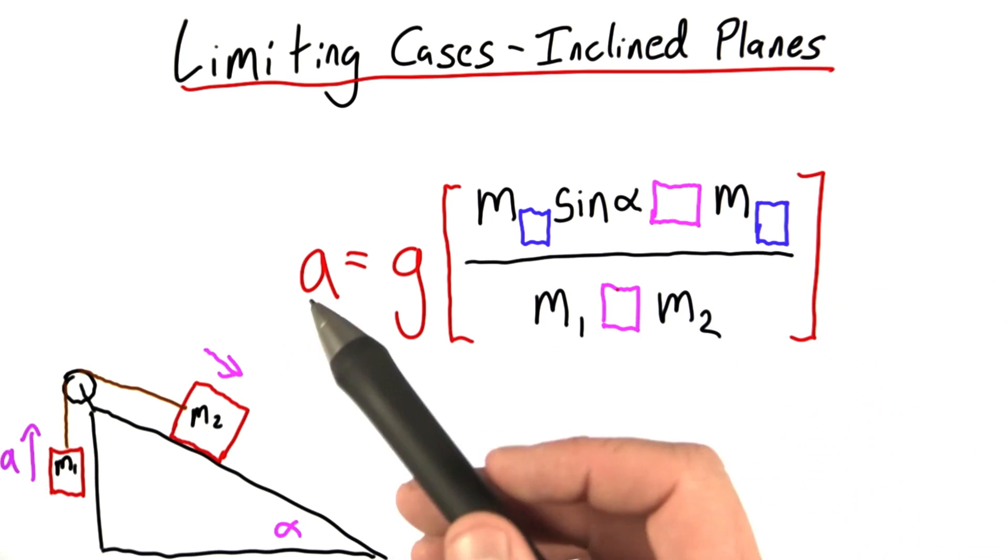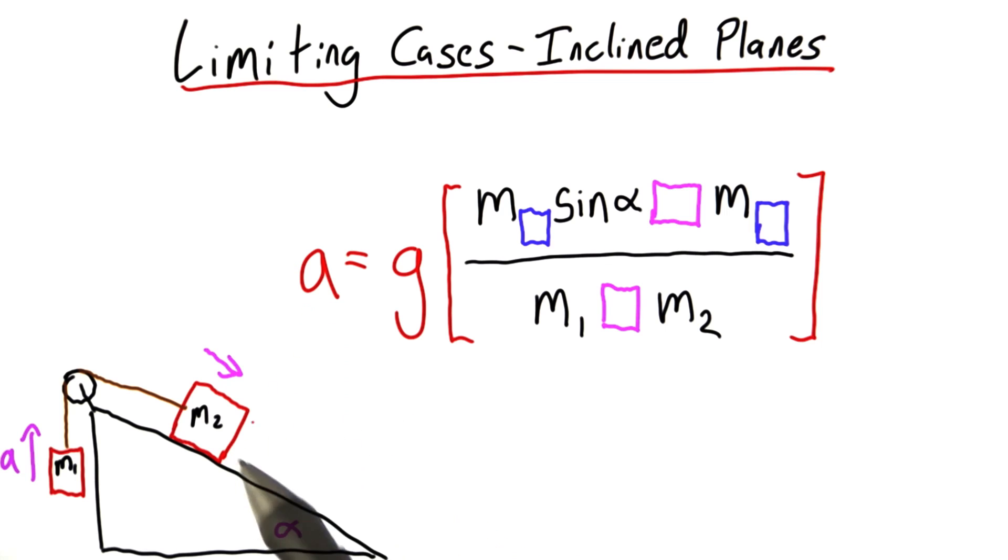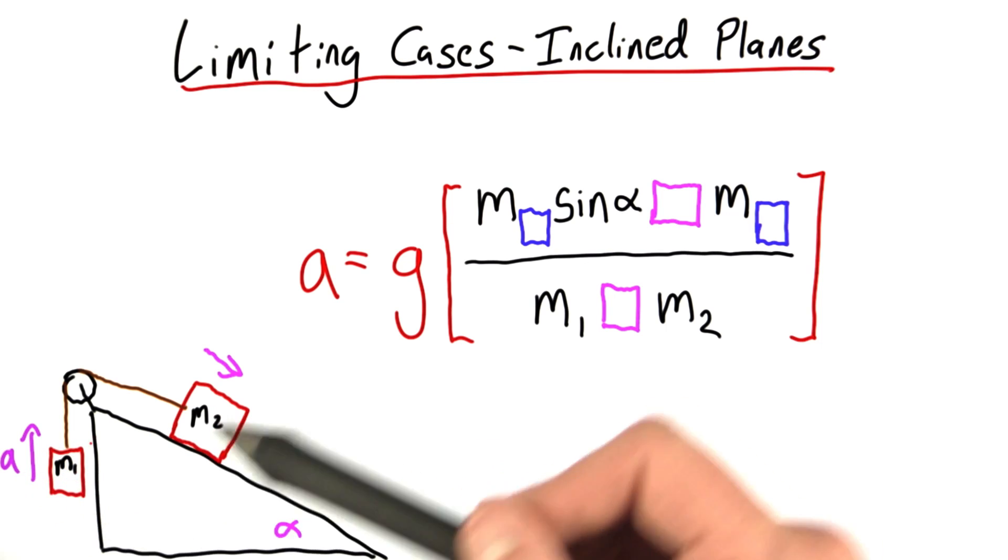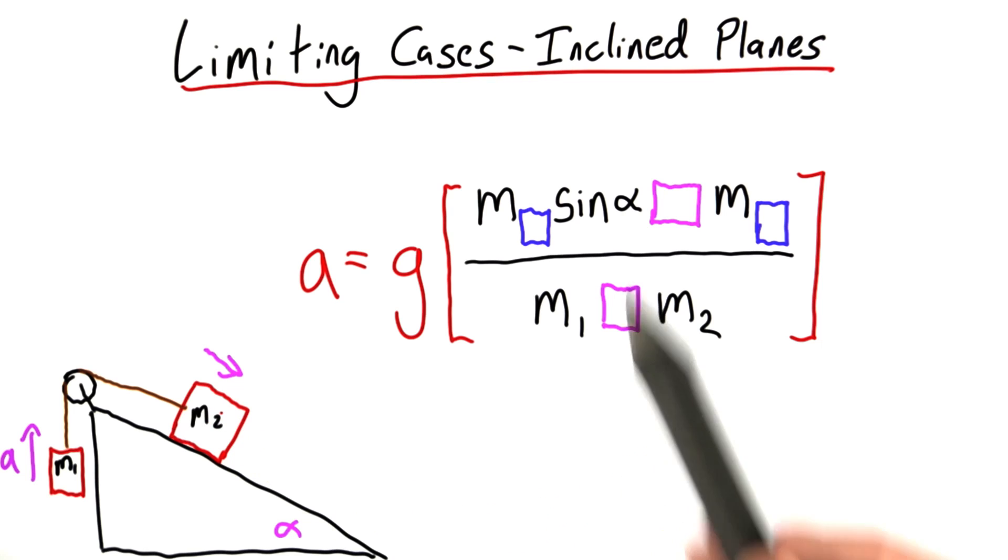Now, what I want you to do is to really think about this problem. Think in your head, maybe test some limiting cases. So, for example, what happens if m2 is huge and m1 is really small, maybe 0? What happens if m1 is really big and m2 is close to 0? What do you expect the acceleration to look like in those cases?